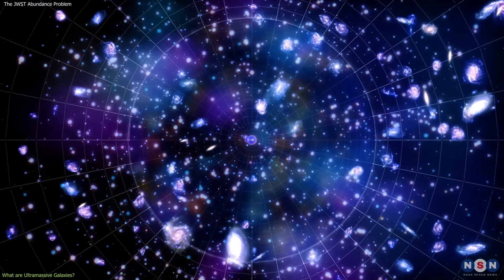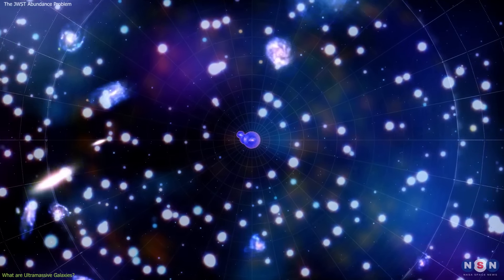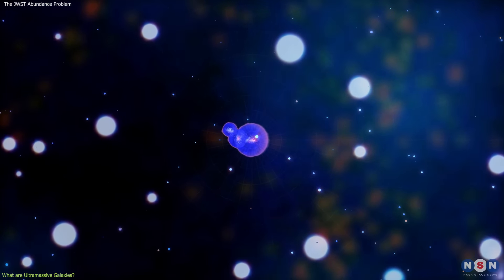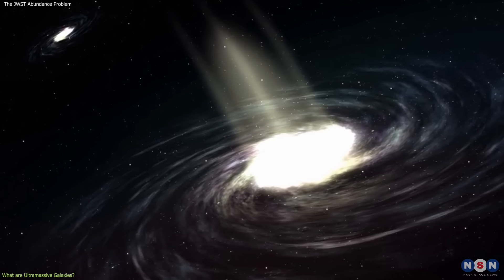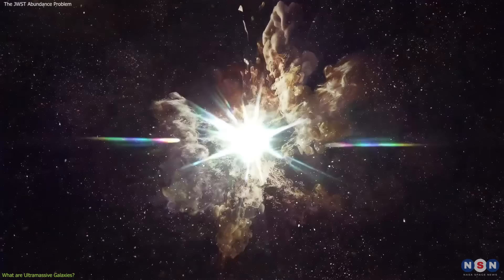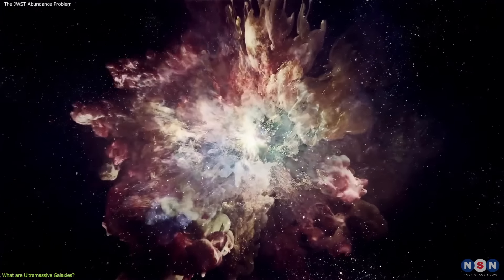The model also predicts that the first stars and galaxies are very different from the ones we see today. They are expected to be very small, faint, and metal poor, because they have not had enough time to enrich their gas with heavy elements from supernova explosions.